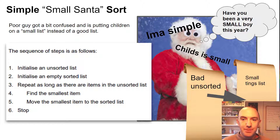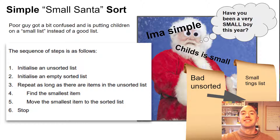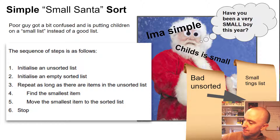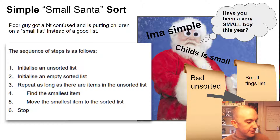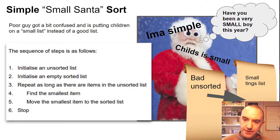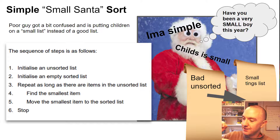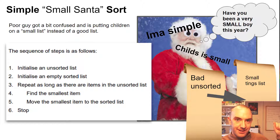Picture this: in the computer science lab, by a shelf, slumped against the shelf is a simple Santa Claus who has two lists. One of them says bold list — or bad, his naughty list — and the other has small things, because he's figured out that children are small and they go on the small things list. The reason I want you to remember this image is because that's how simple sort works: you have an unsorted list and you take the small thing and put it on the small list. That's it. It's that simple, hence the name.